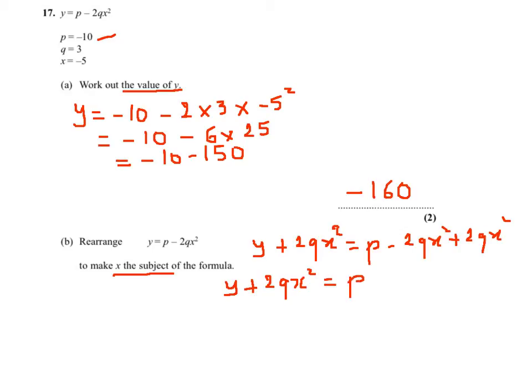My next step is to subtract y from both sides. So I will get 2qx squared equals p minus y. Then I will divide by 2q on both sides and it will give me x squared equals p minus y over 2q.